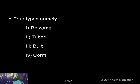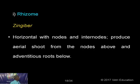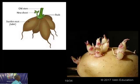Four types of underground stem propagations are there: rhizome, tuber, bulb, and corm. The first is rhizome, best exemplified by ginger (Zingiber officinale), called ingi in Tamil. It is horizontal with nodes and internodes, producing aerial shoots from nodes above and adventitious roots below. Here you can see small young plants coming from the potato — this is sweet potato and this is regular potato, showing vegetative propagation.